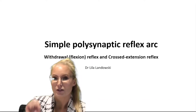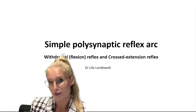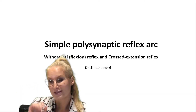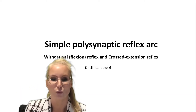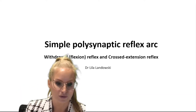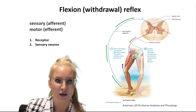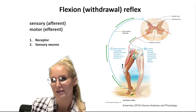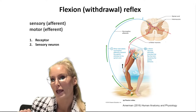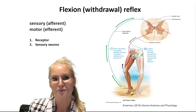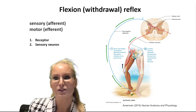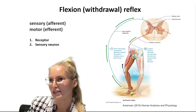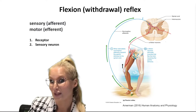The polysynaptic reflex is made of five components, so let's walk through them together. Any simple reflex has a sensory or afferent component and a motor or efferent component. Let's start with the sensory part, where it all begins.